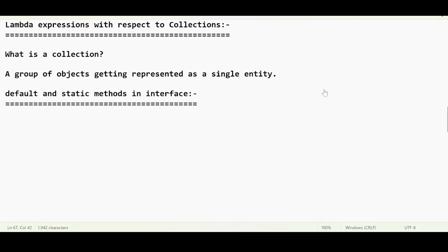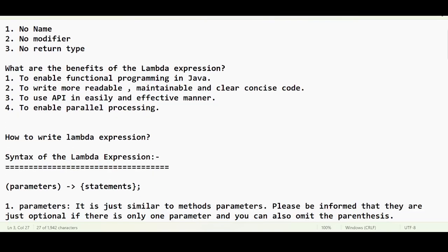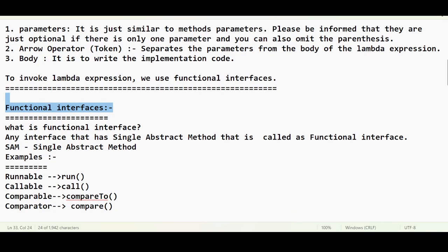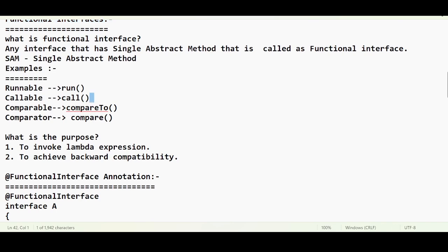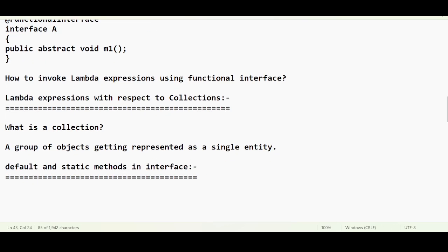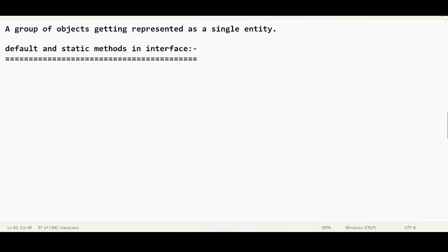Okay, we are good to go. So we have understood lambda expressions, and in our previous sessions we have also understood functional interfaces. Any interface with a single abstract method is called a functional interface. We have seen examples of functional interfaces and also understood how to use lambda expressions with respect to the collection framework. Today we will understand a very important topic: default and static methods in interfaces.